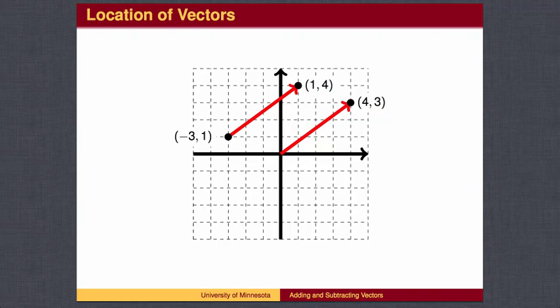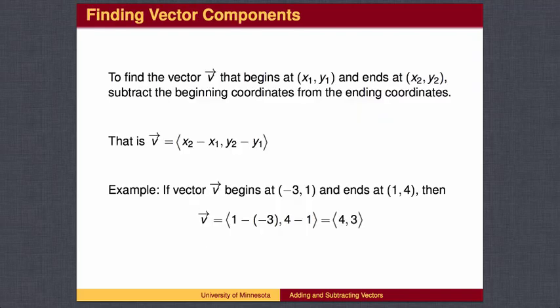The vector describes the amount we move from beginning to end. In both of these vectors, we move 4 to the right and 3 up. In general, to find the ordered pair for a vector, find each coordinate by subtracting the beginning coordinate from the ending coordinate.